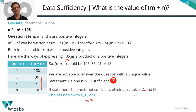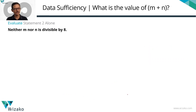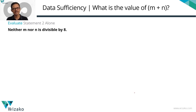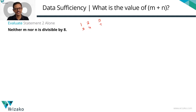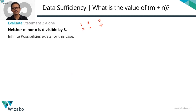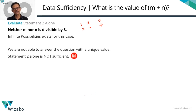Statement 2 says neither m nor n is divisible by 8. This is essentially a junk statement on its own — it will either be useful when combined with statement 1, or it's not sufficient alone. What is the value of m plus n? m could be 1 and n could be 2, giving m plus n = 3. Or m could be 3 and n could be 4, giving m plus n = 7. There are infinite possible cases where neither m nor n is divisible by 8. So statement 2 alone is clearly not sufficient. We can eliminate answer options B and D. Combined with earlier eliminating A and D, we are now down to C or E.